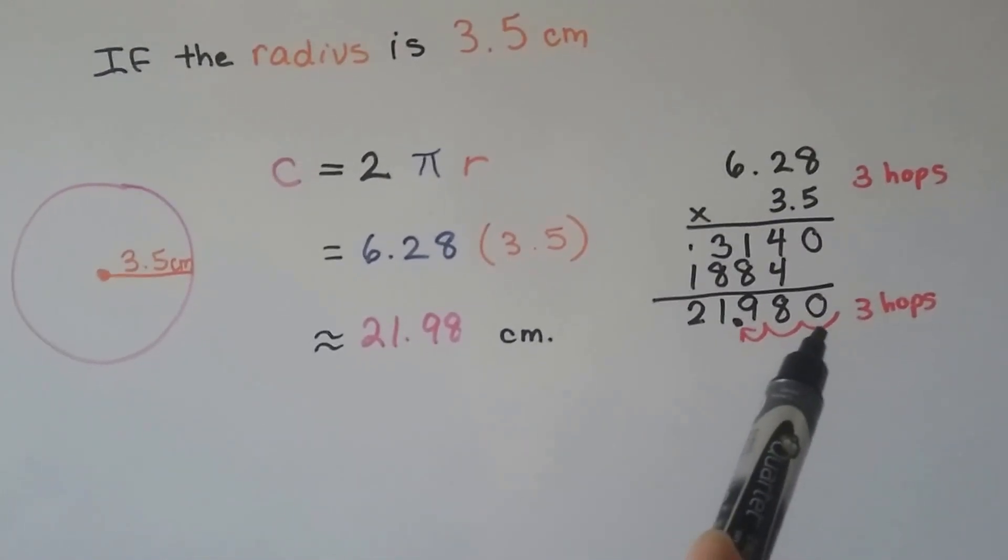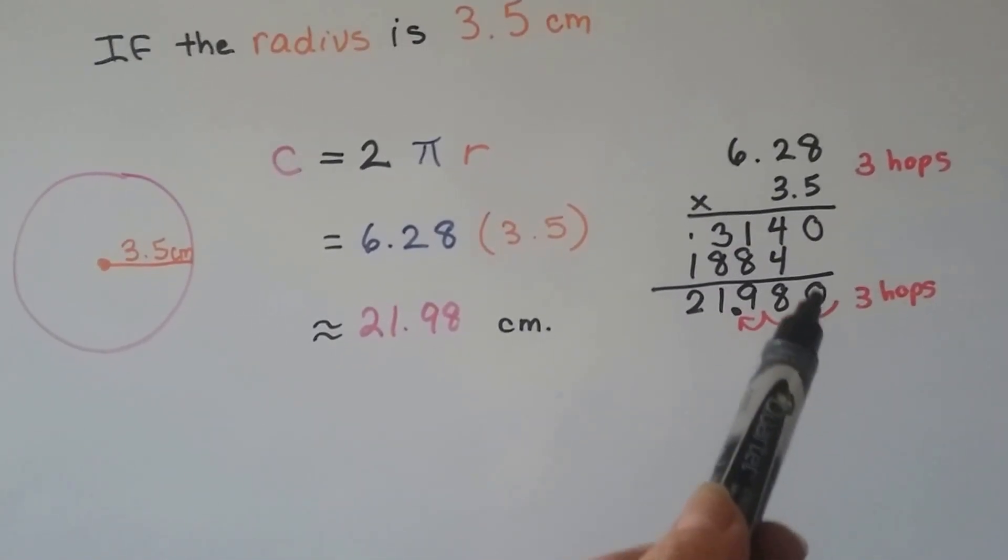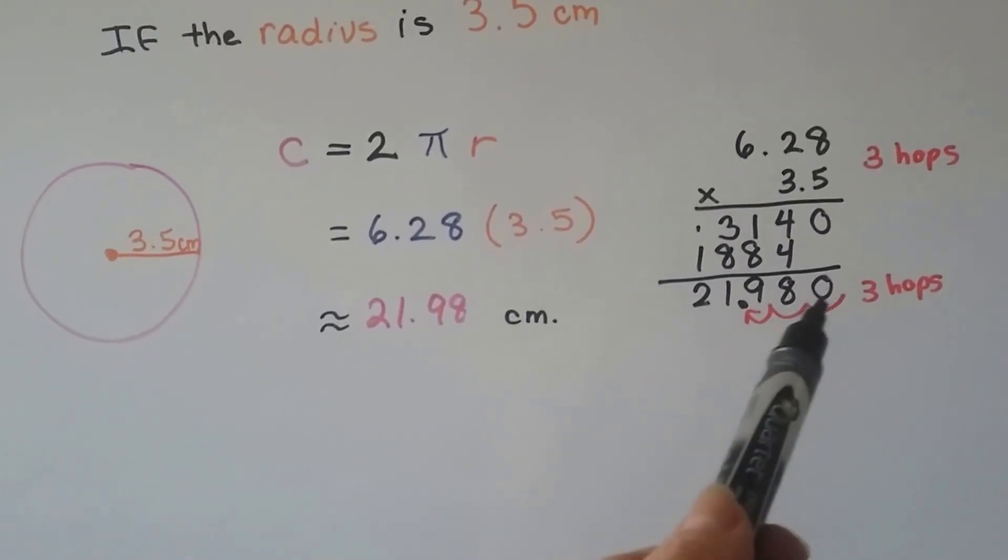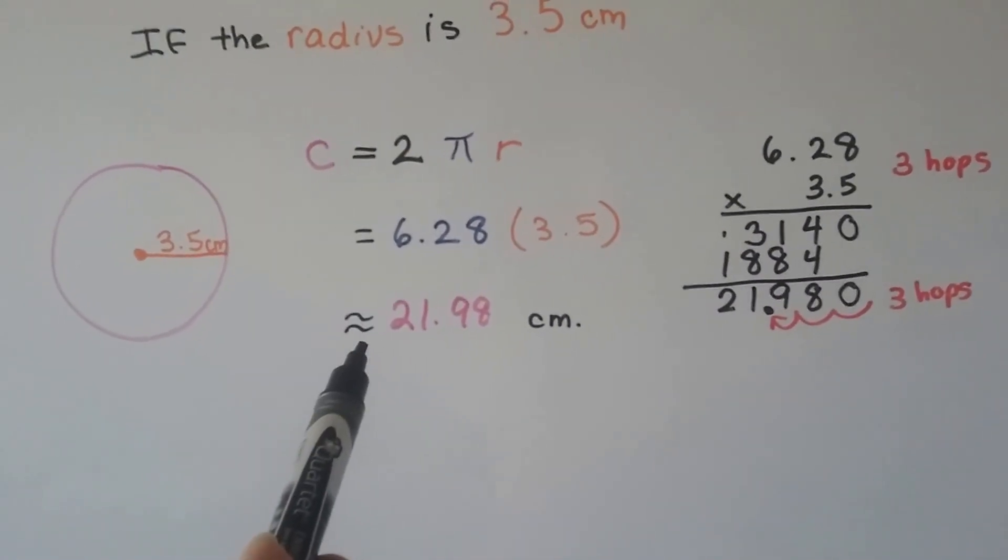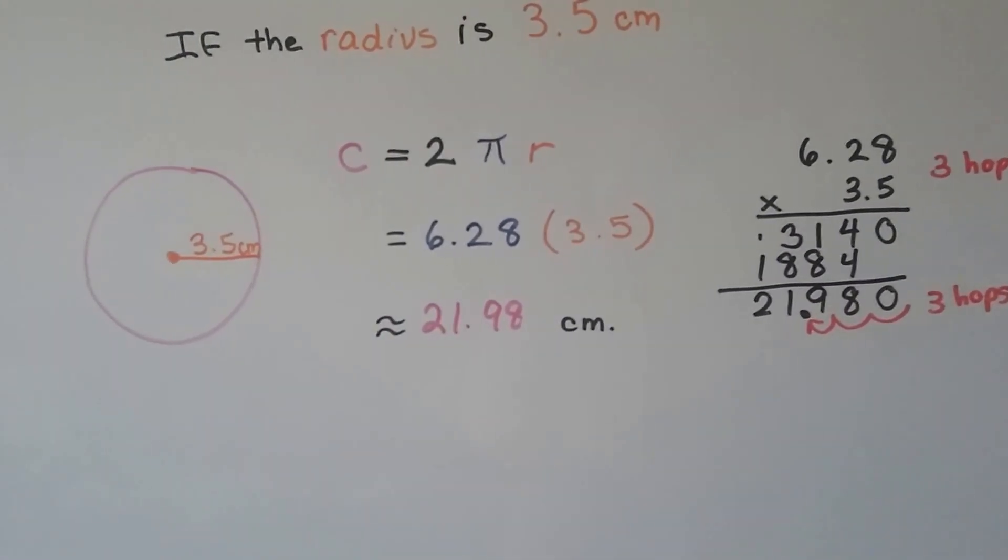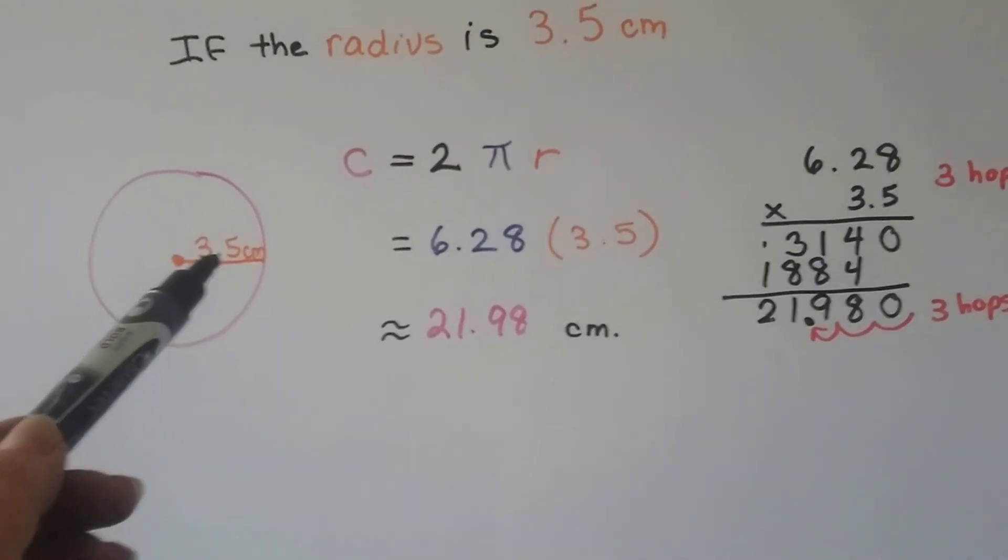There's 3 hops in the equation, there's 3 hops in the product. We don't need that last zero. He's just taking a space. So, it comes out approximately as 21.98 centimeters.